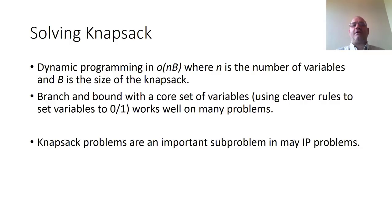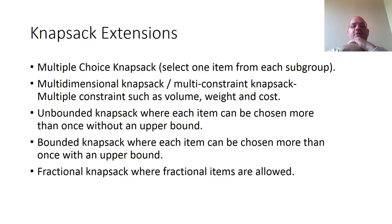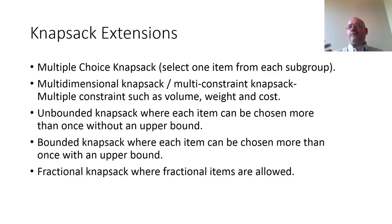There are many extensions to the knapsack. A multiple-choice knapsack selects one item from each subgroup — for instance, picking one tent from among three you own. A multi-dimensional knapsack has multiple constraints such as weight, volume, and cost. An unbounded knapsack allows each item to be chosen more than once without an upper bound; a bounded knapsack allows multiple choices with an upper bound; and a fractional knapsack allows fractional items. Formulations are a key item on your exams.